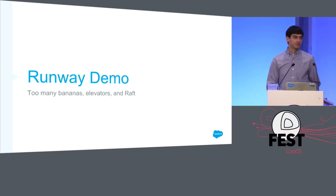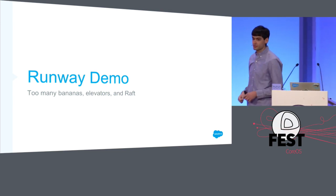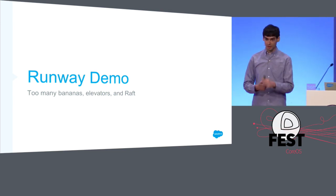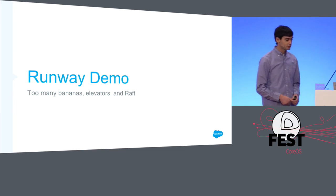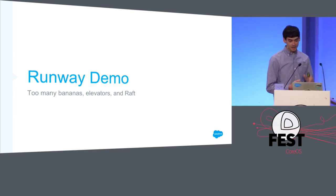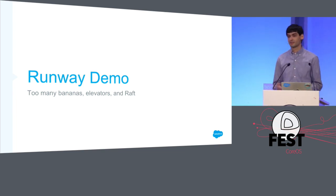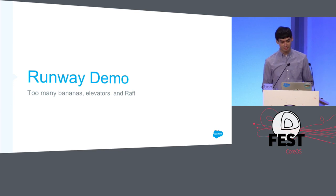I'll go into a few demos now. I've got three models to show you: the too many bananas model — a very important problem — an elevator system, and of course Raft.